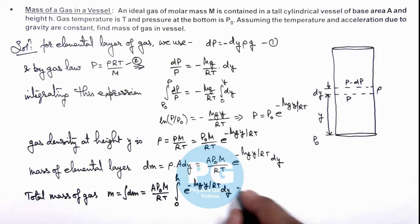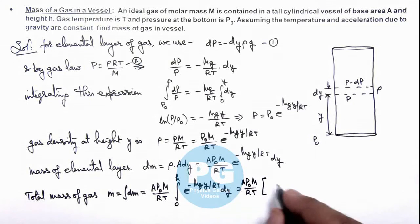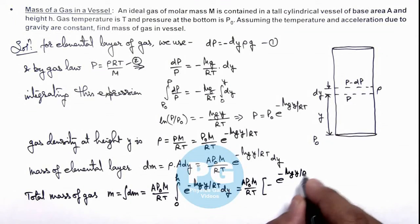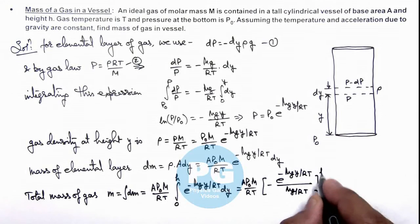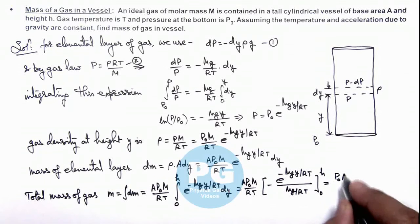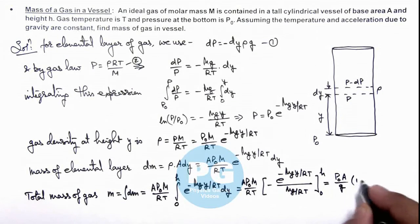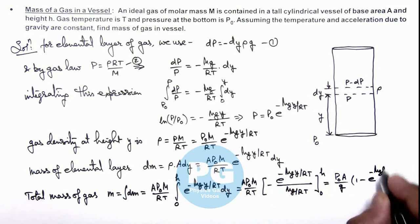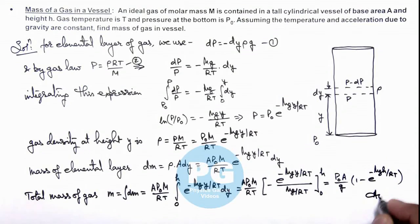On substituting the limits after integrating - as its integration will be e^(-Mgy/RT) upon -Mg/(RT) - so this gives us A P₀ M/(RT), and integration gives us -e^(-Mgy/RT) divided by Mg/(RT), and we put limits from zero to h. So the final result we are getting here is: M/(RT) gets cancelled out and this gives us P₀A/g multiplied by (1 - e^(-Mgh/RT)). This is the final result of this problem.